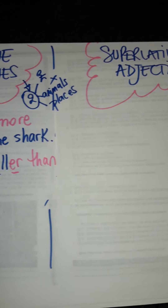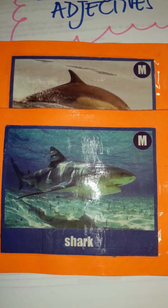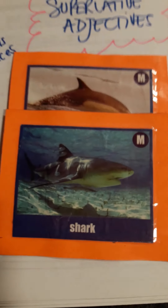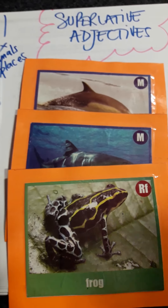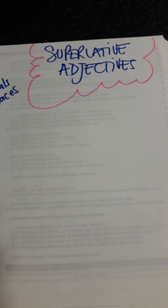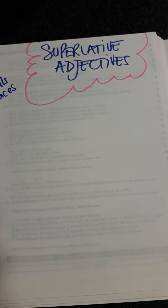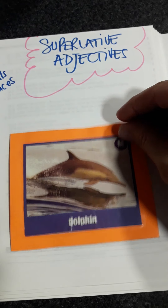Now, imagine that we have three. We have again the dolphin and the shark, and then we add a frog. If we have to use 'intelligent' again, we can say that the dolphin is the most intelligent of the three.